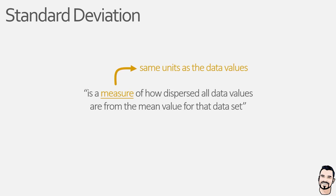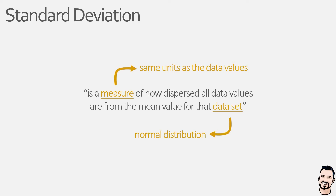Now before we move on to calculate the standard deviation, one thing is crucial: our data set must have a normal distribution. This means it will have a bell-shaped distribution curve where data values closer to the mean will occur more frequently than data values which deviate further from the mean.